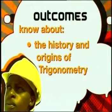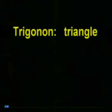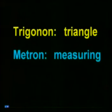By the end of this lesson, you should know about the history and origins of trigonometry, and the practical uses of trigonometry in our world. If you look up the word trigonometry in a dictionary, you will see it comes from two Greek words: trigonon, meaning triangle, and metron, meaning measuring. Trigonometry is based on the study of right-angled triangles — that is, triangles that include an angle of 90 degrees. In trigonometry, we study the ratios of the sides of triangles, and the ways in which the sides and angles of triangles are related to each other.